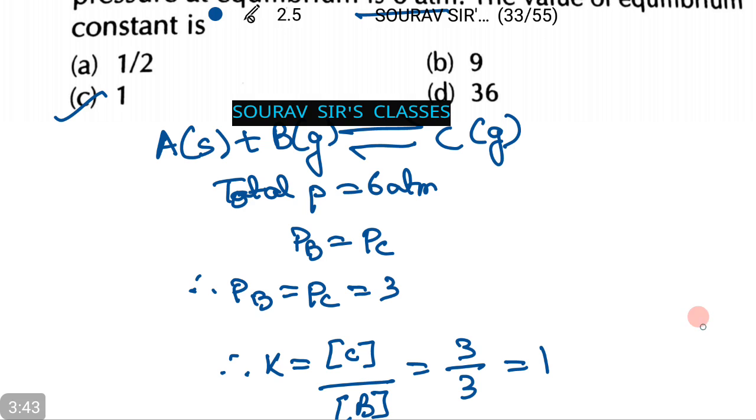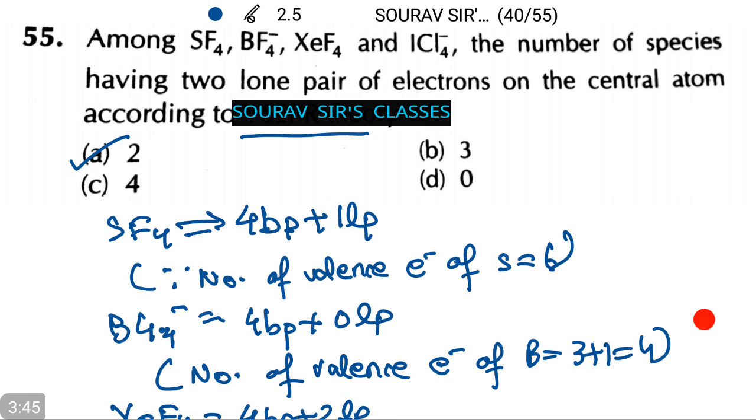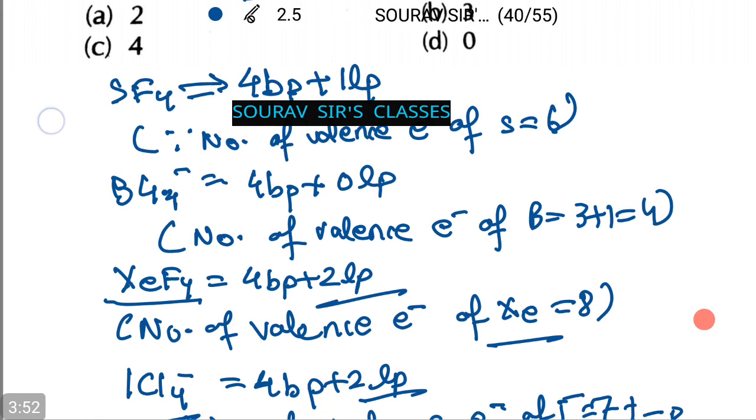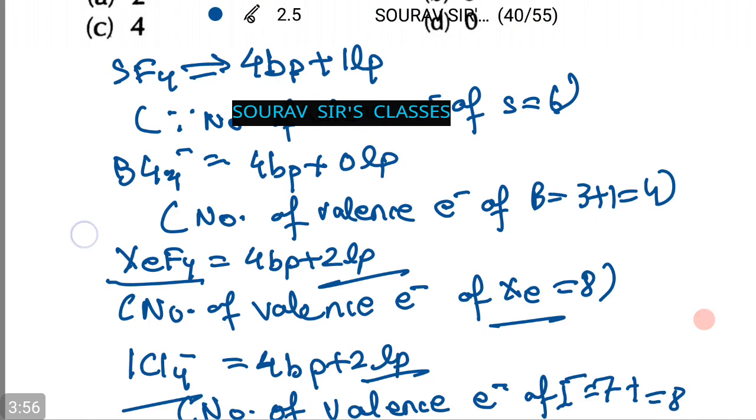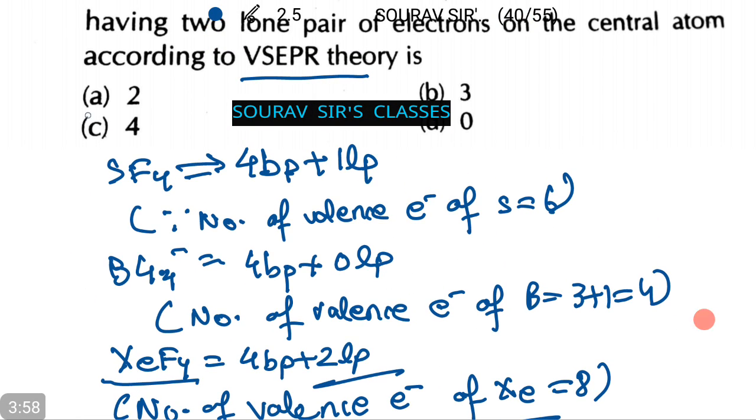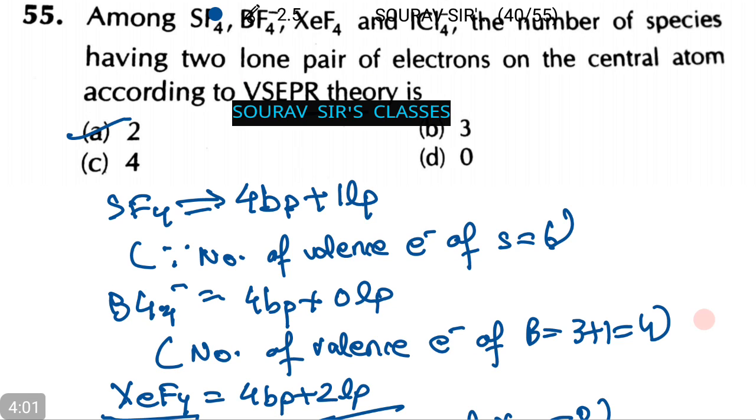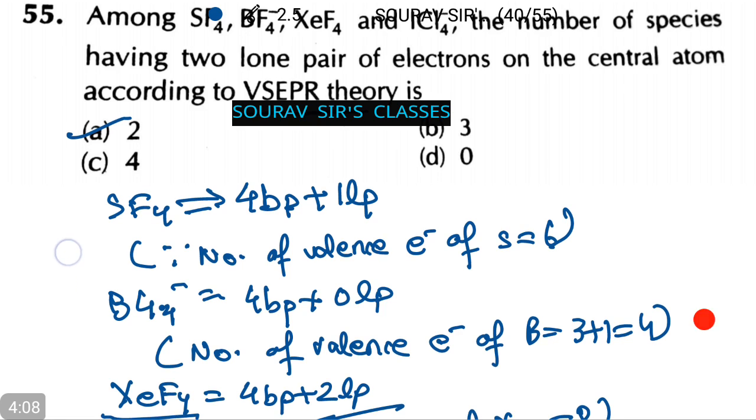Moving on to the next one. As you might see, I have already calculated the valence electrons of each and every element that we have from SF₄, BF₄⁻, XeF₄ and ICl₄⁻.